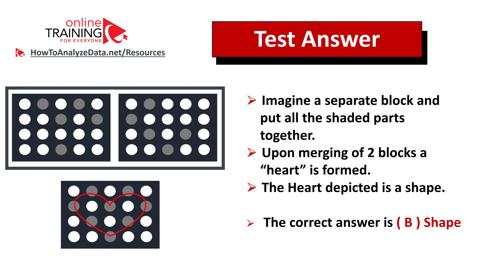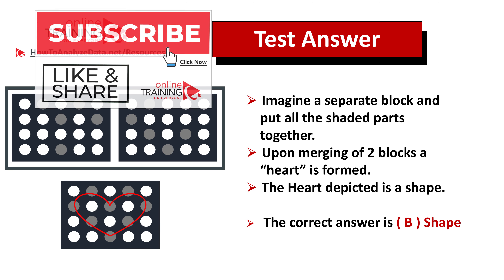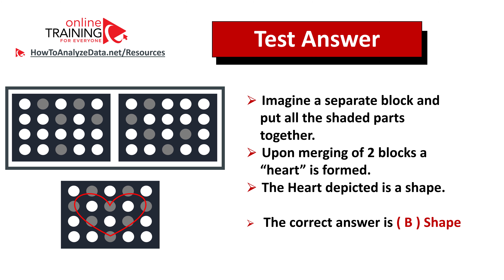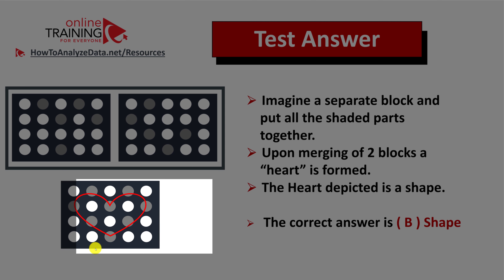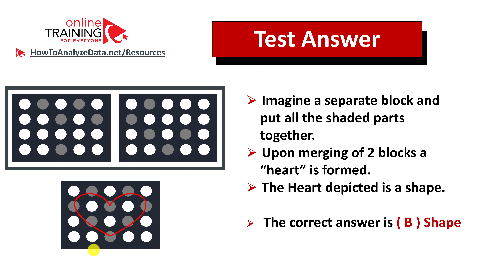The best way to solve these types of questions is to imagine a new block and understand what is formed when all the shaded circles are merged together from the two original blocks. Upon merging, you will see that a heart is formed — and a heart is a shape. So the correct answer is choice B, shape.